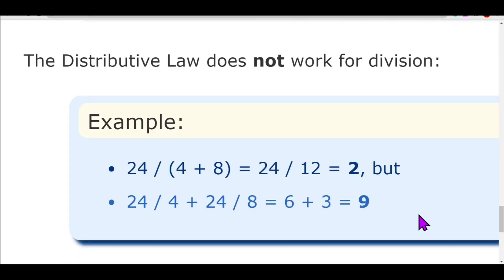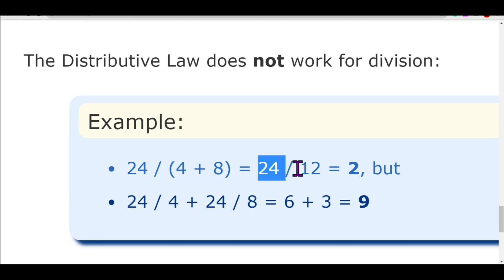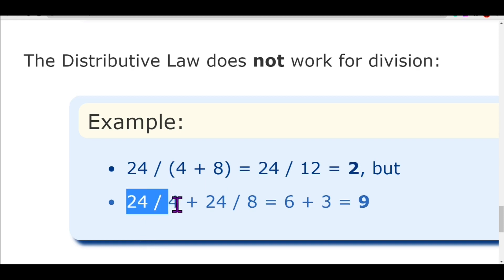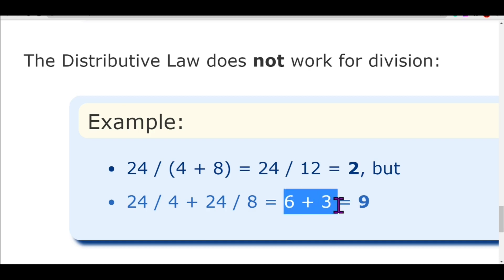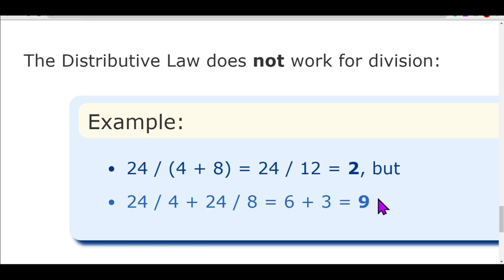Distributive property is applicable on subtraction, but it is not applicable on division. For example, 24 divided by (4 plus 8): solve the bracket first — four plus eight is twelve, so 24 by 12 is 2. But if you distribute 24 to both denominators, you get 24 by 4 plus 24 by 8, which is 6 plus 3, which is 9. Since 2 and 9 are not equal, the distributive law is not applicable on division.